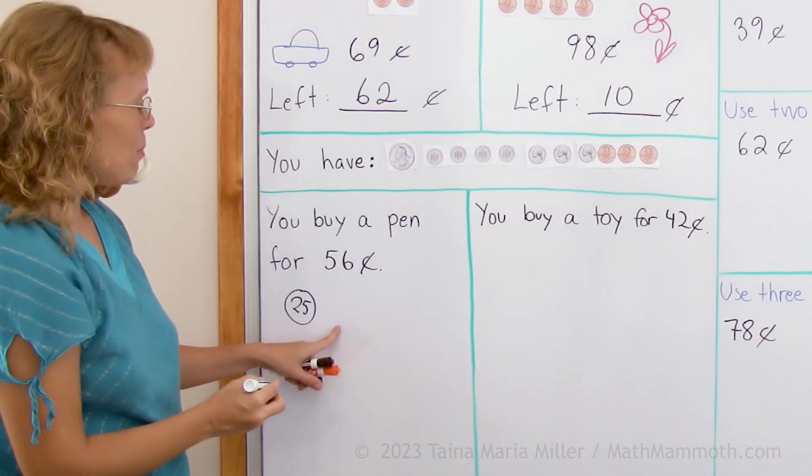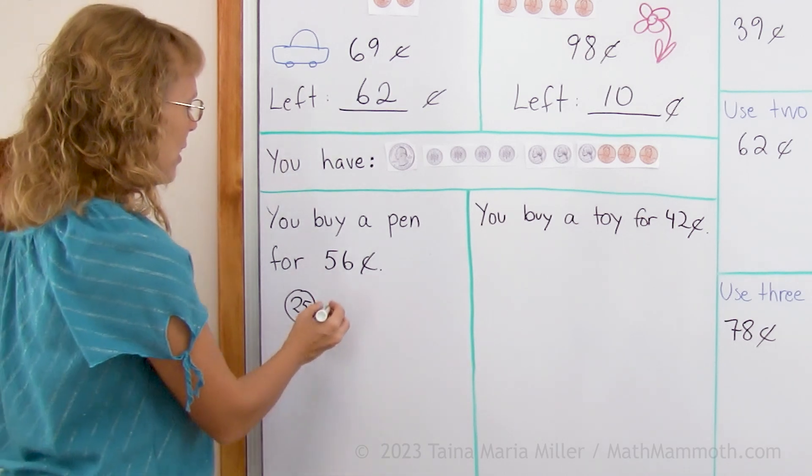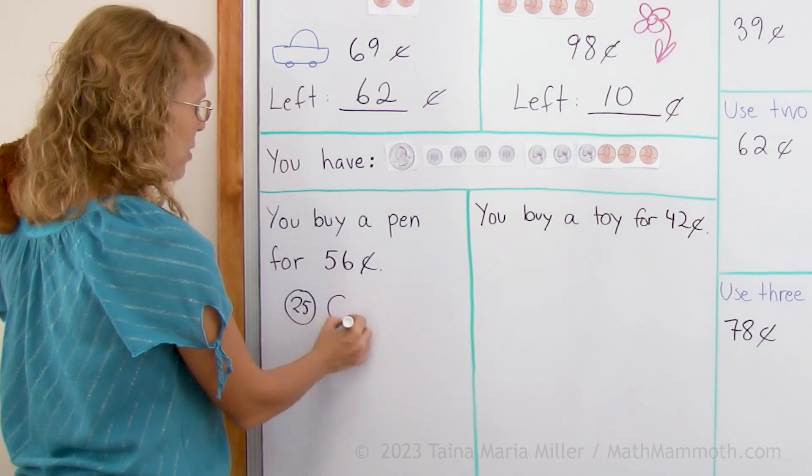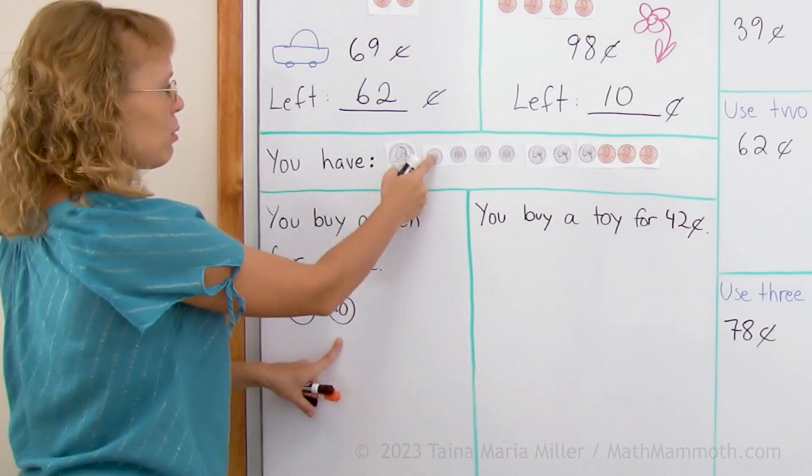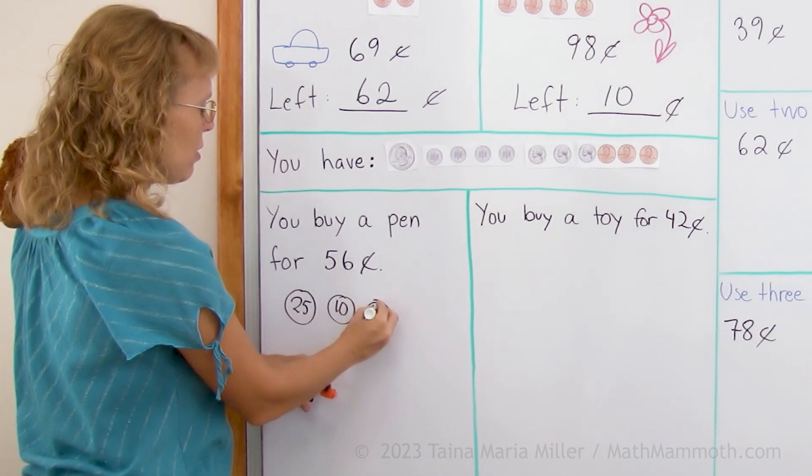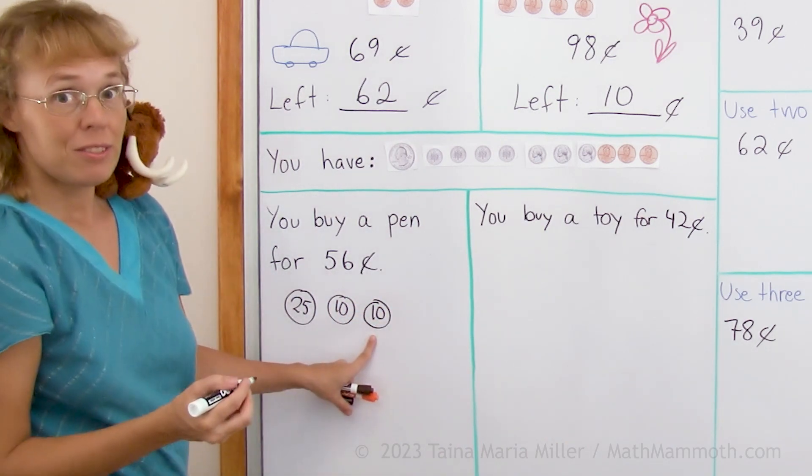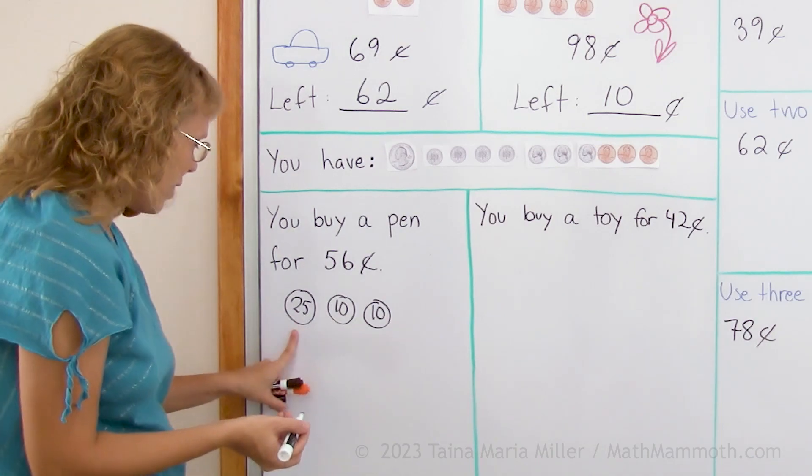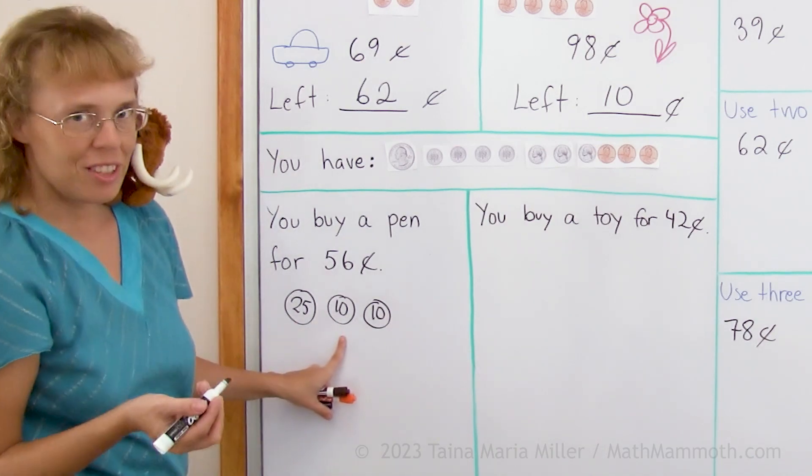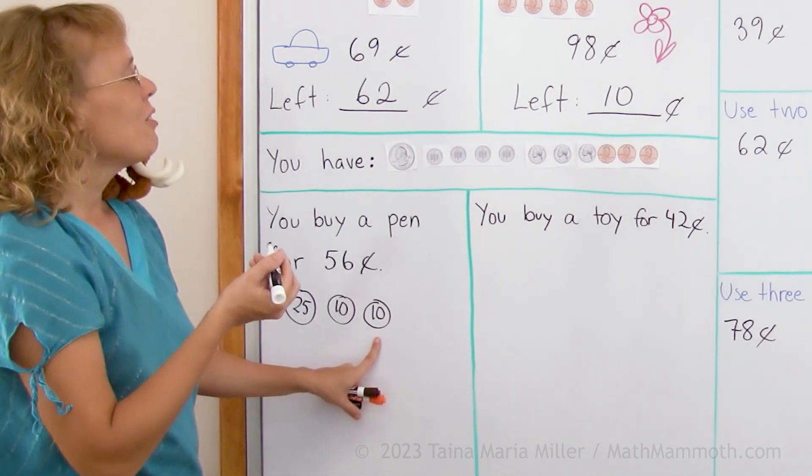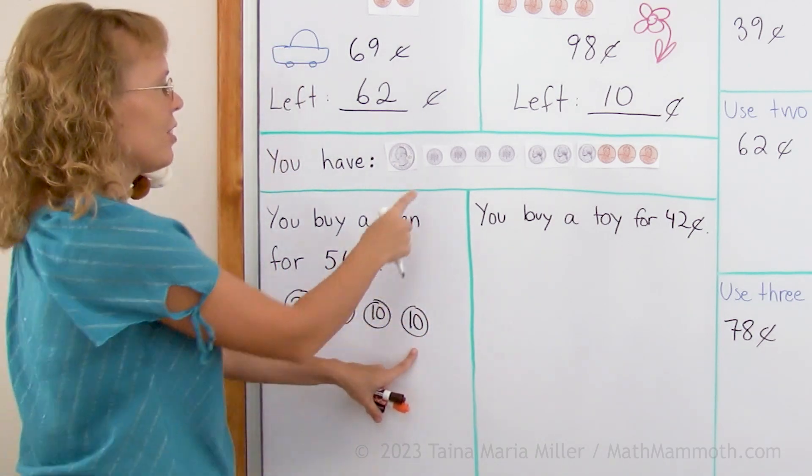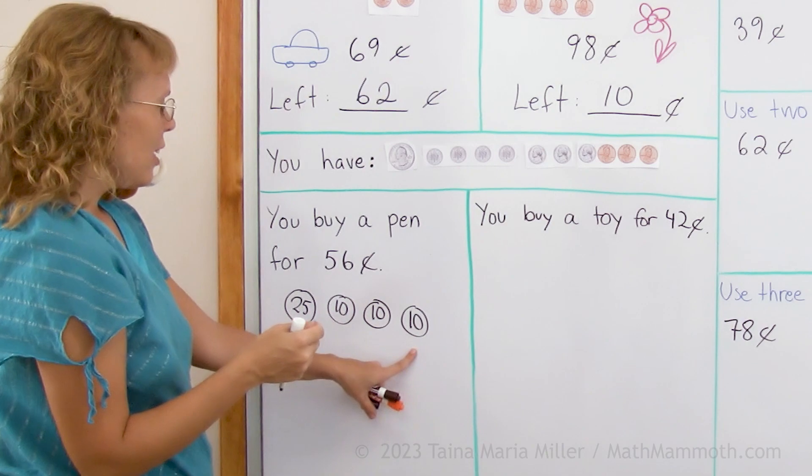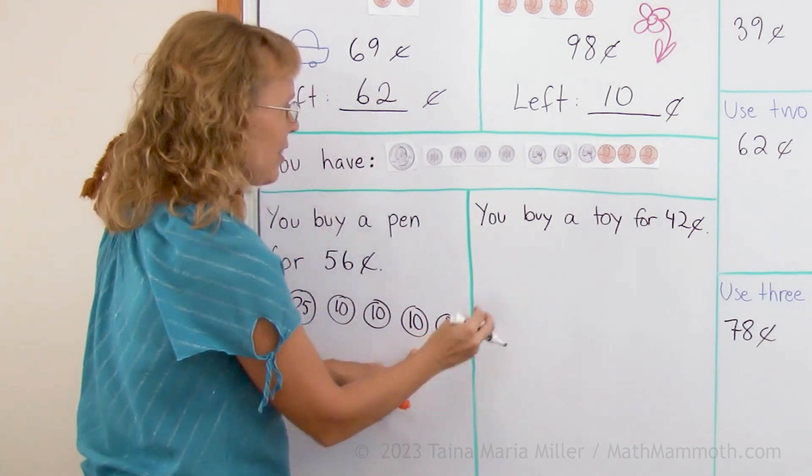Then I need some more. Let's say that I get a 10, a dime. Now that would be 35. Then another dime would be 45, right? So there's 25, 10 more 35, 10 more 45 and one more 10 would be 55. You have all those dimes. And then just one cent like that.